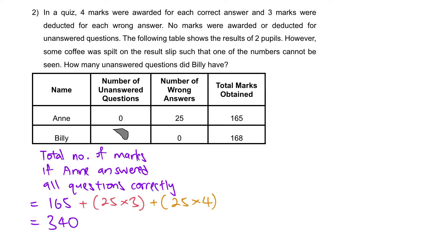From here, we are going to figure out how many questions are there. So total number of questions. If 340 is the total marks when all questions are answered correctly and each of them will be awarded 4 marks, we are just going to take that and divide it by 4, which will give us 85. So there are 85 questions in total.